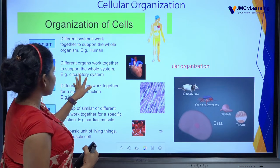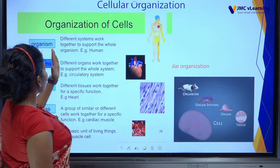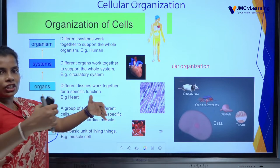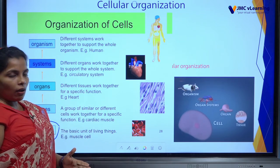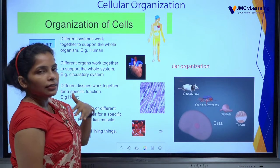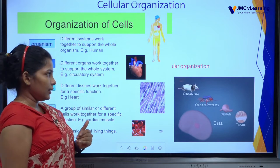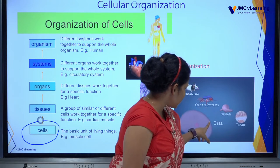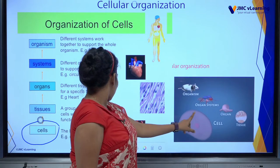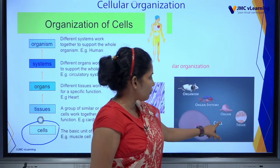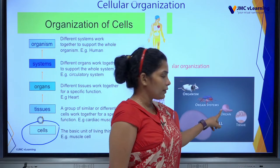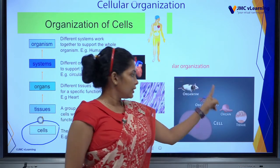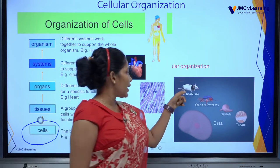An example of a system is the circulatory system. The organism is the final and major level — the combination of systems. An example is a human. So the hierarchy is: Cell → Tissue → Organ → System → Organism. The smallest and basic unit of living things is cells, then tissues, then organs, then systems, and finally organisms.